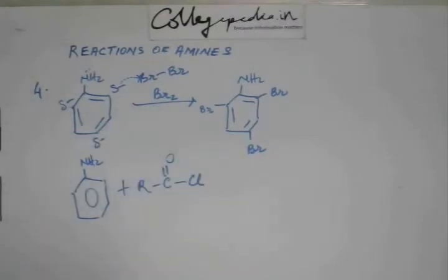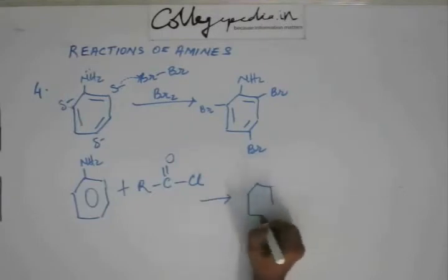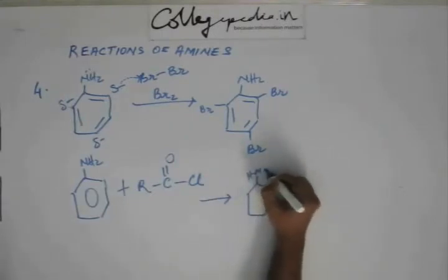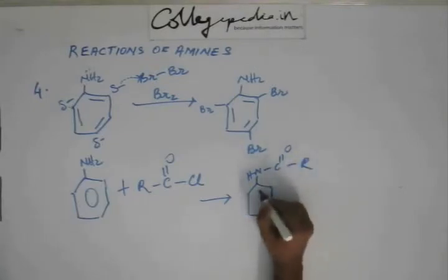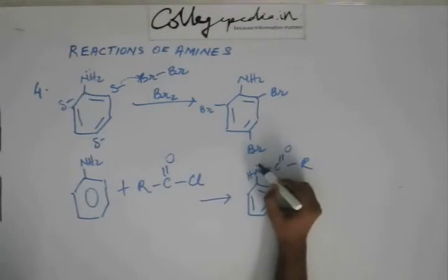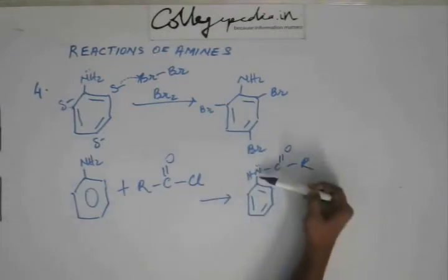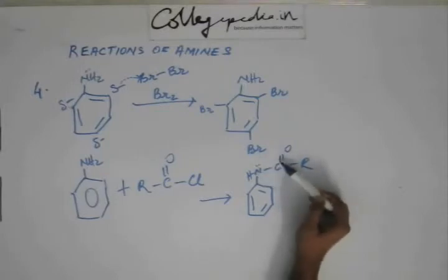The technique to do that is as follows: if we make aniline react with acyl chloride, then we will have an amide. The chlorine leaves and the nitrogen forms a bond with the carbonyl carbon. Now this nitrogen is pumping its electrons into the benzene ring, but this nitrogen is also in resonance with the C=O double bond. This nitrogen is in cross-conjugation — it is in conjugation with C=O and also with the phenyl ring.